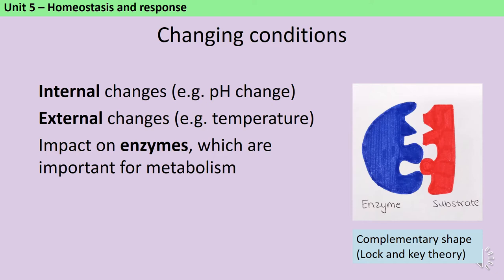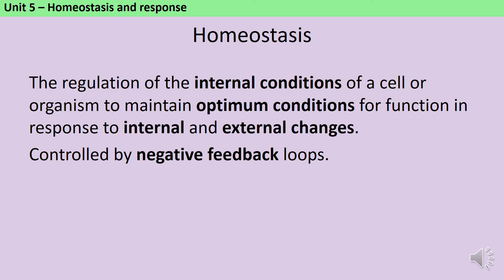Denaturation means enzymes are permanently deformed and their active site will no longer be able to interact with their substrate. So it's crucial that a cell or organism can overcome any changes to keep the conditions the enzymes are exposed to constant. The AQA GCSE definition states that homeostasis is the regulation of the internal conditions of a cell or organism — so that means the conditions inside the cell — in order to maintain optimum conditions for function.